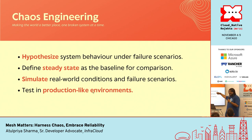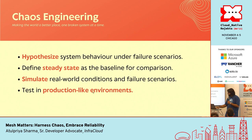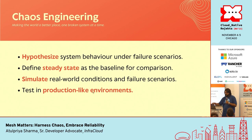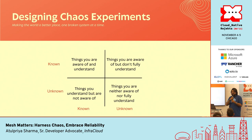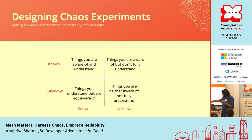I'll show a demo that will give you a better idea of what I'm trying to say. You start by a hypothesis, you define a steady state, and then you do a real-world scenario and test it in your production setup. Chaos is all about designing chaos experiments. While chaos engineering is a very huge term, what we do essentially is create different experiments, and I'd like to present those experiments as knowns and unknowns.